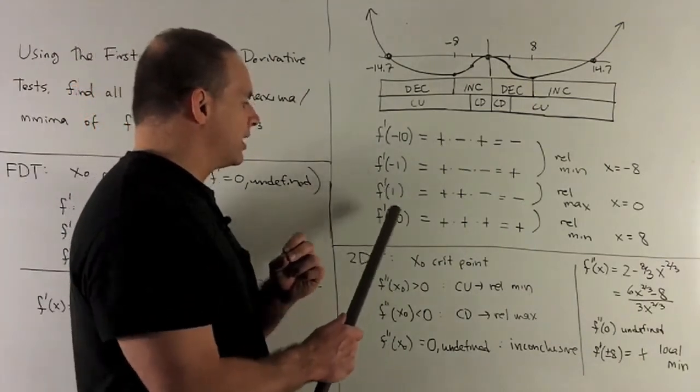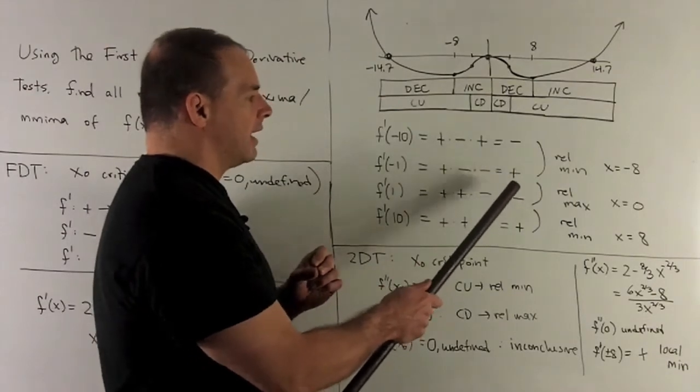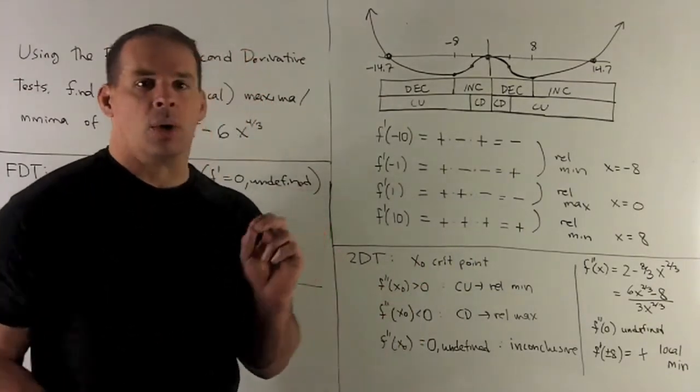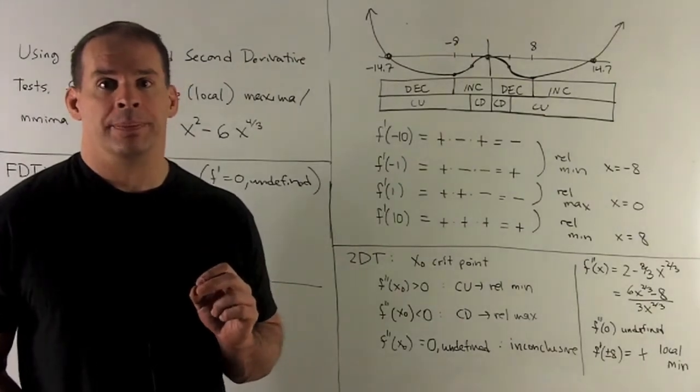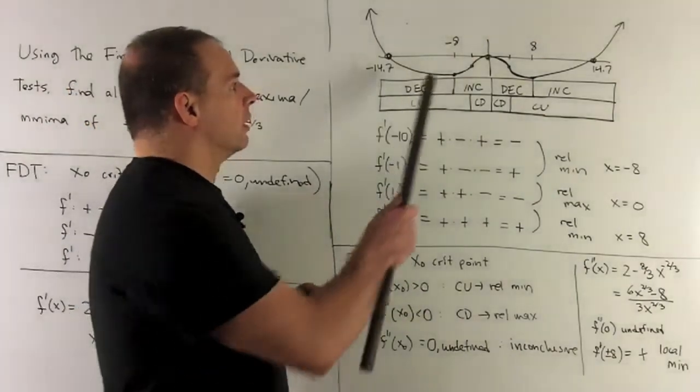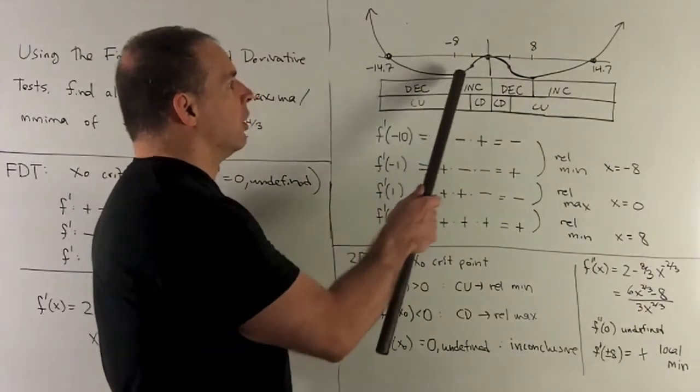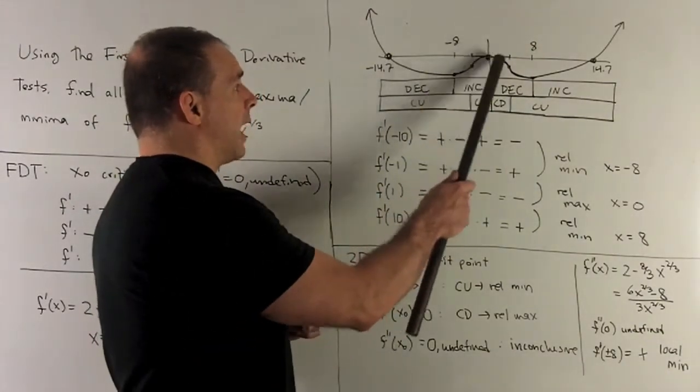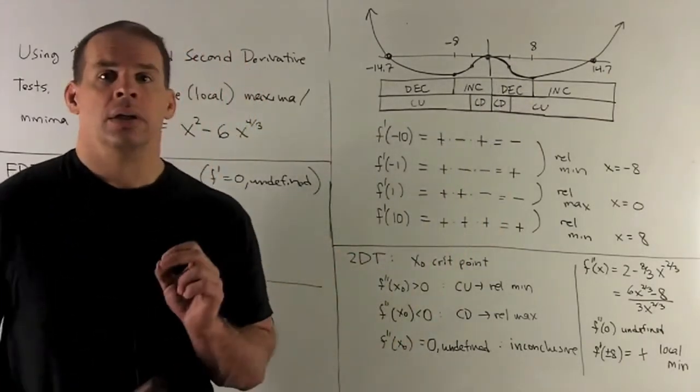We could check at 1 and 10. And then we'll note, we'll go from positive to negative, and then negative to positive. So at 0, we'll have a relative max. And then at 8, we'll have another relative minimum. If we check on the graph, this isn't to scale, but it's enough to give us an idea of what's happening. Relative minimum, relative maximum, and then another relative minimum.